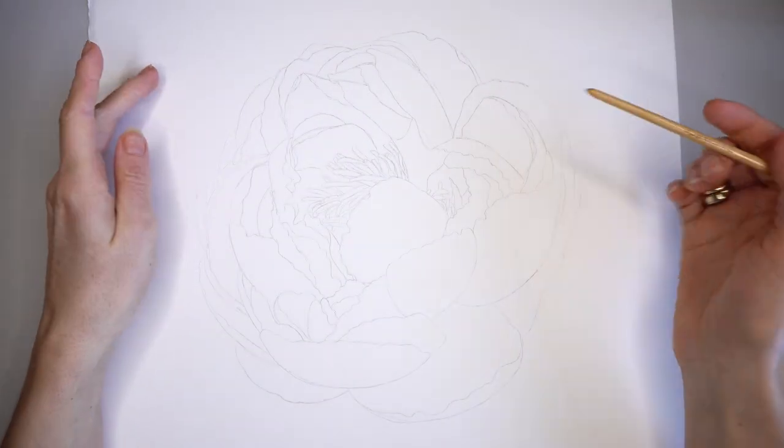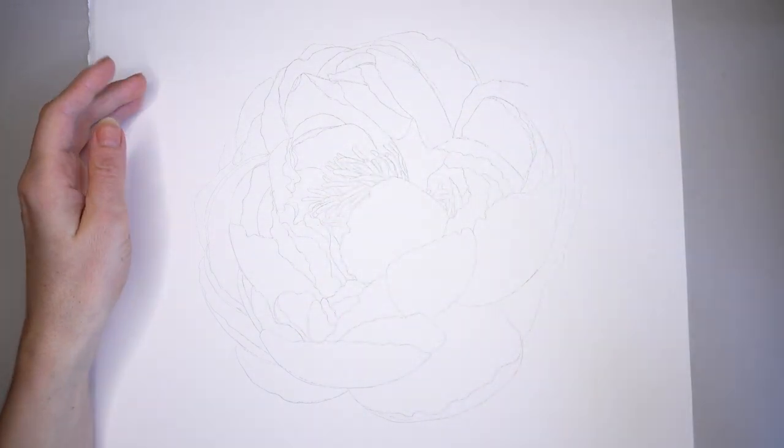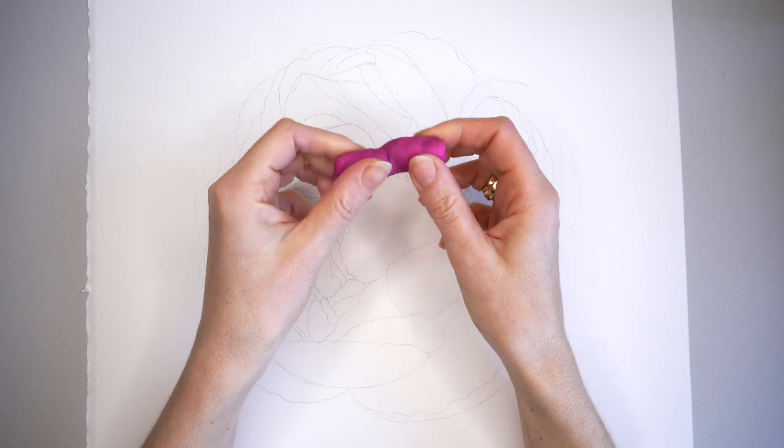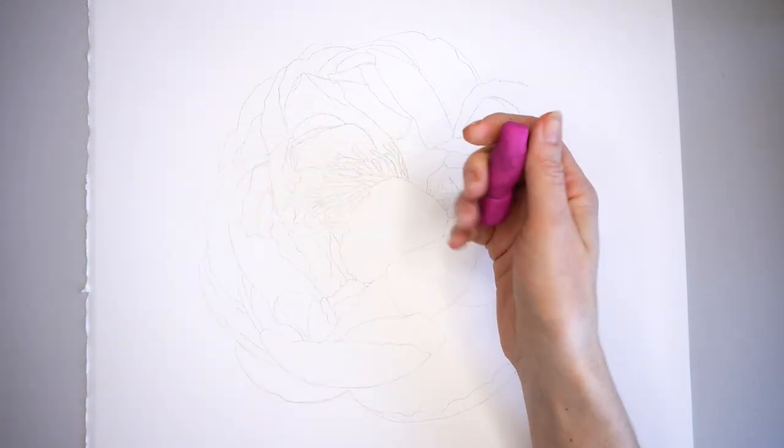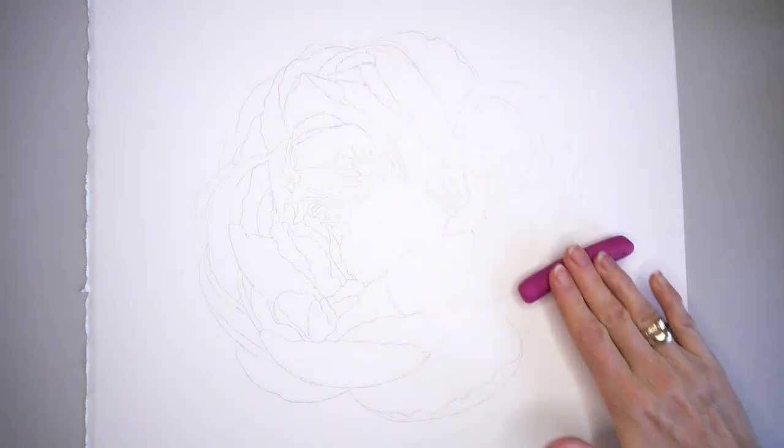An outline drawing is done. This time this is a really enlarged peony flower head. Taking an elastic eraser, removing the excess amount of graphite from the paper.